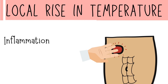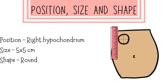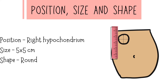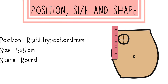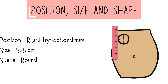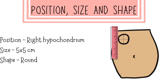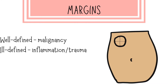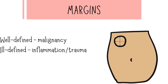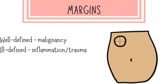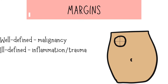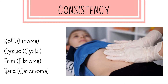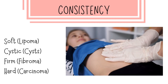We confirm the position, size, and shape found on inspection. The size is confirmed using a ruler. Then margins are a very important finding — we check if the margins are well-defined or ill-defined. Well-defined margins are usually seen in malignancy, whereas ill-defined margins indicate that the swelling is either inflammatory or traumatic in origin.